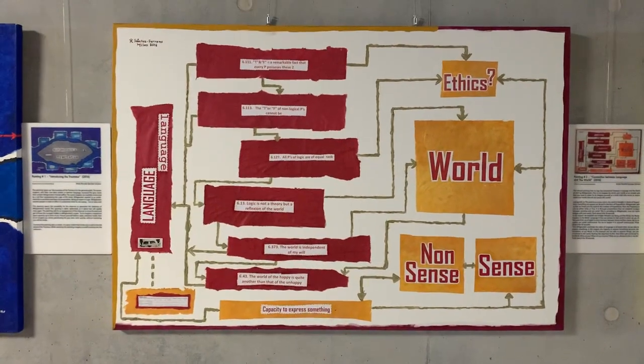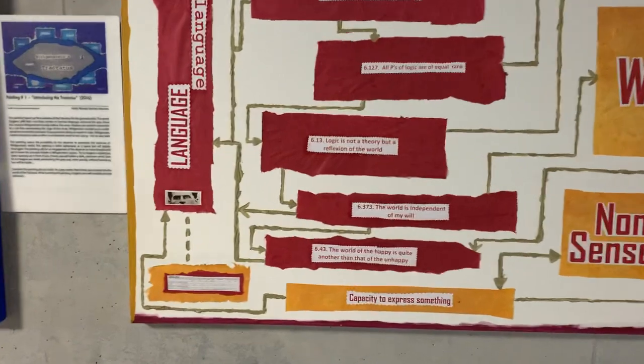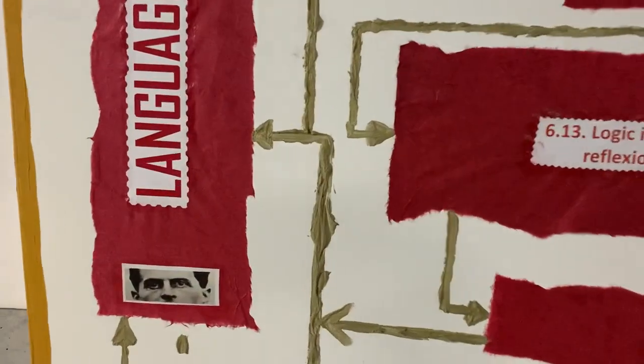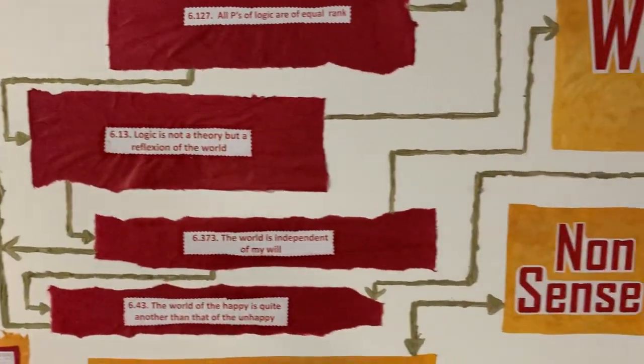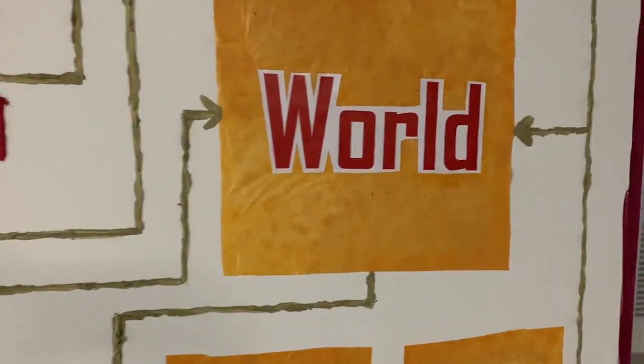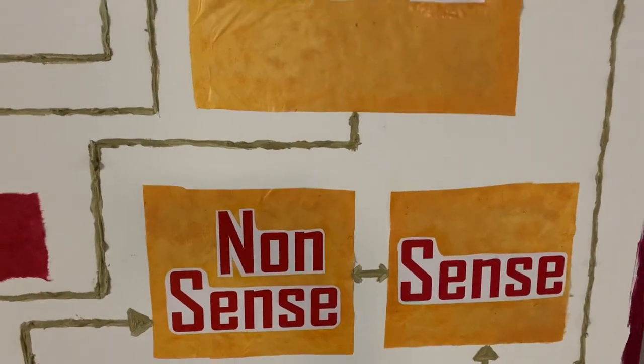What Wittgenstein is interested in: he's interested in language. He's going to try to focus on language and how language builds the world and how it explains the world. He's always trying to find explanations to the world, exploring what makes sense and what doesn't.